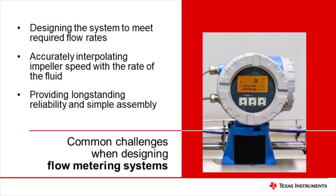It is important to consider mechanical design elements when creating a flow meter, as these characteristics can translate to mechanical errors that dictate the performance and accuracy of the meter. One of the main components to consider is the desired sensing range, as this will influence the impeller size implemented into the system. The impeller size regulates the minimum and maximum flow rate that can be handled by the flow meter.